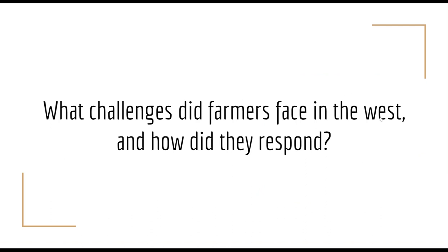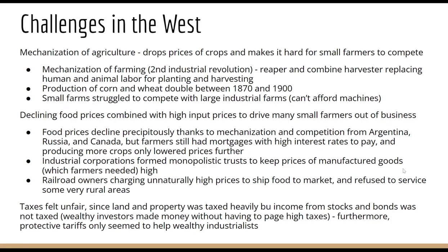So what challenges did farmers in particular face in the West, and how did they respond? Two-thirds of them failed by 1900. One of the big challenges was the mechanization of agriculture. Thanks to the second industrial revolution, technology like the mechanized reaper and the combine harvester really replaced a lot of human and animal labor for planting and harvesting. This made the production of corn and wheat double between 1870 and 1900.